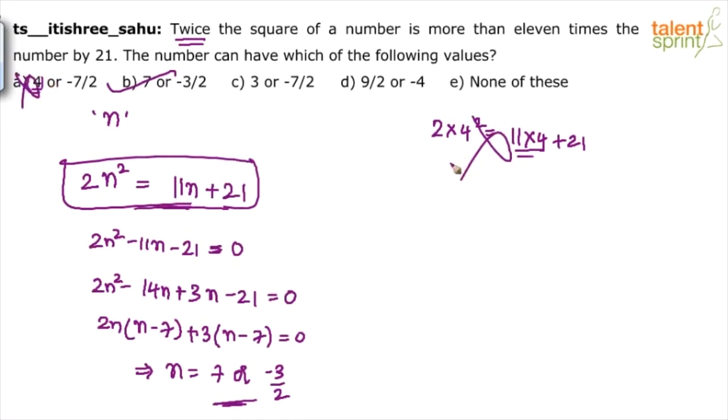Then let's say if you see option C, what happens? 2 into 3 square equals to 11 into 3 plus 21. Now 3 square is 9, 2 into 9 is 18. This is 18, here we have got 21 on this part itself. Then there is 33. Eliminated.